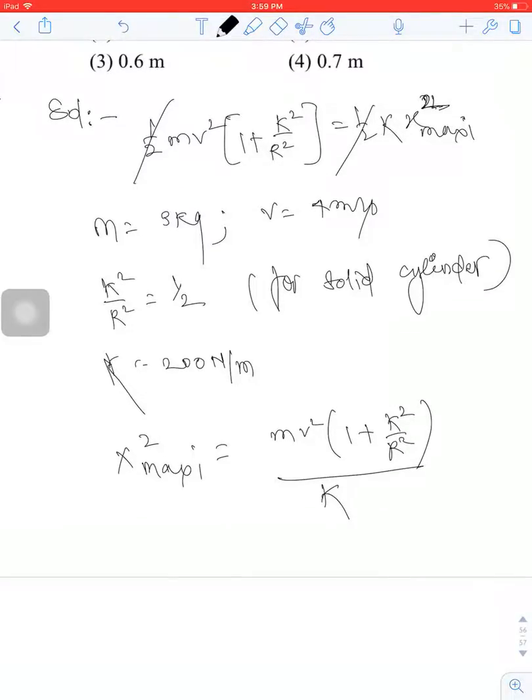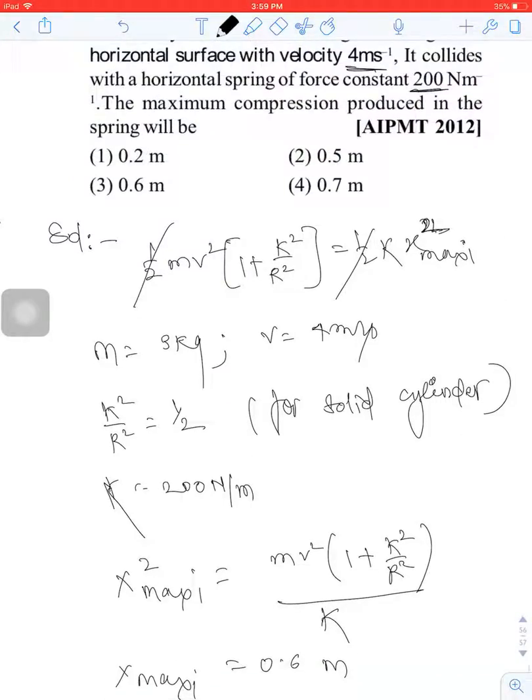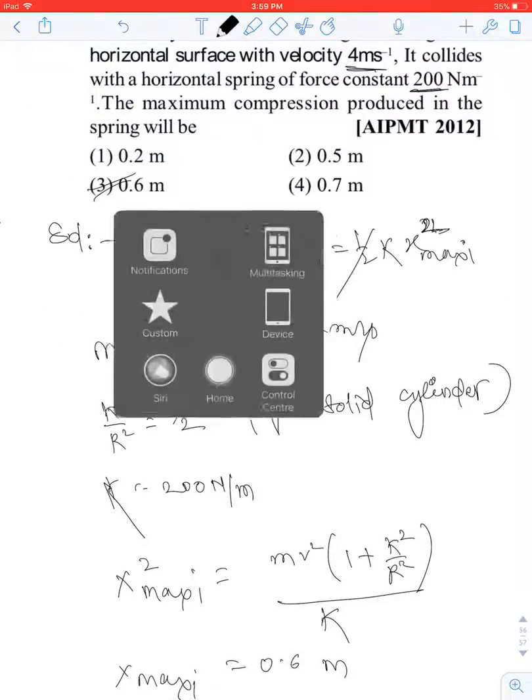Putting all the values in, the maximum x will be 0.6 meters. This means option C is correct.